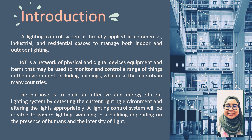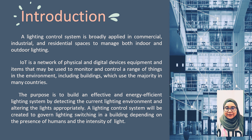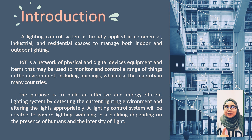For the introduction, an Electrical Control System is broadly applied in commercial, industrial, and residential spaces to manage both indoor and outdoor lighting. IoT, or Internet of Things, is a network of physical and digital devices, equipment, and items that may be used to monitor and control a range of things in the environment, including buildings, which are used widely in many countries.